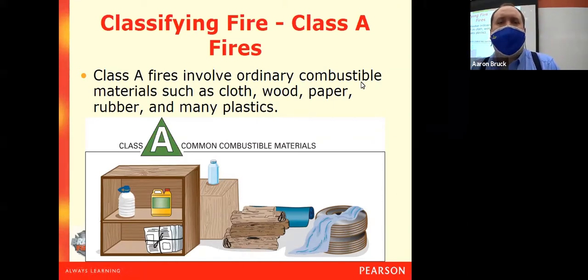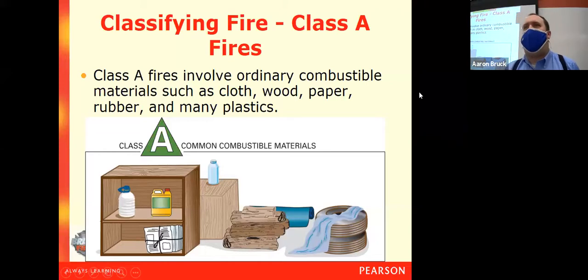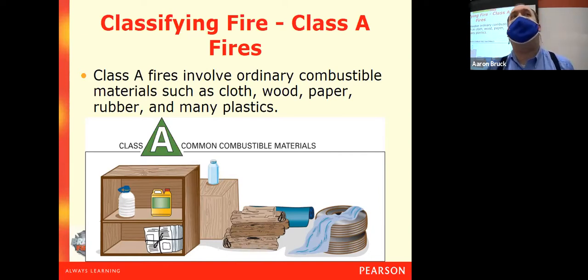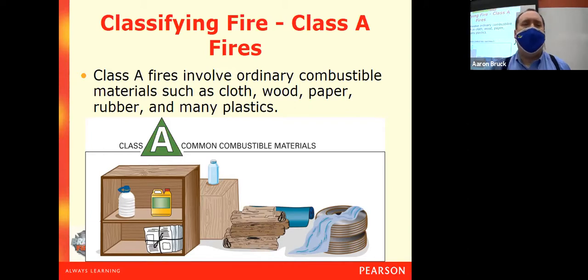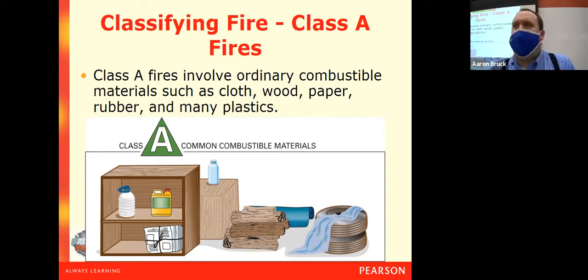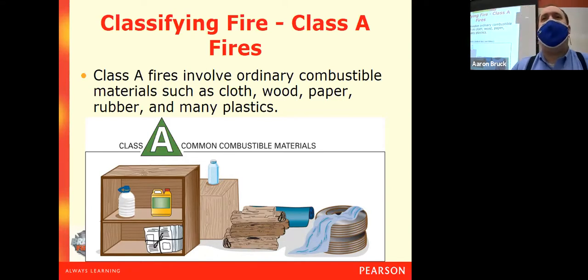For Class A fires, these are the normal fires — the ones we commonly see in houses. If a house catches on fire, it's usually Class A materials that are catching on fire. These are things like wood, paper, clothing, fabric, plastics, rubbers — pretty much common combustibles, common household goods.